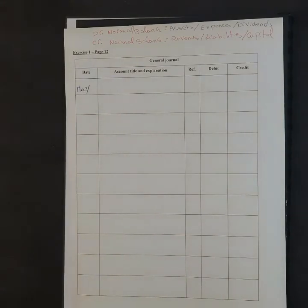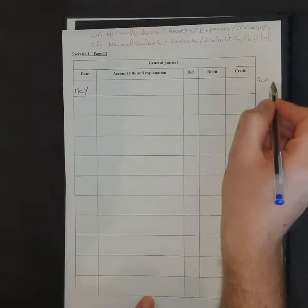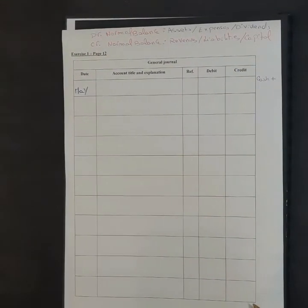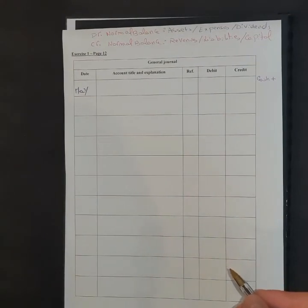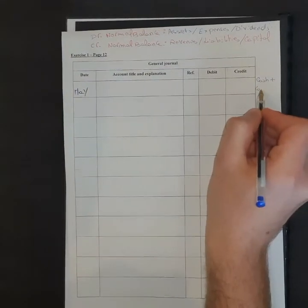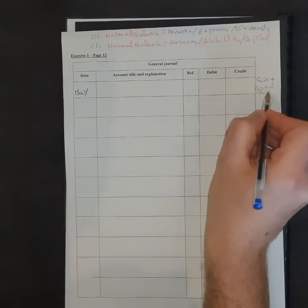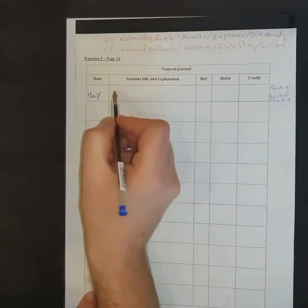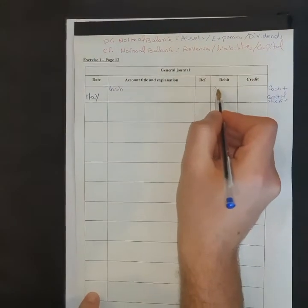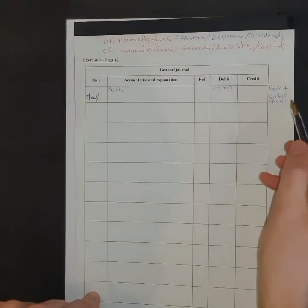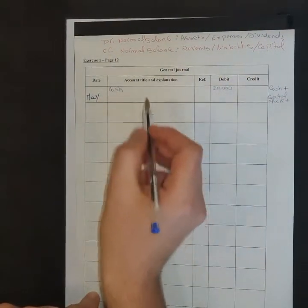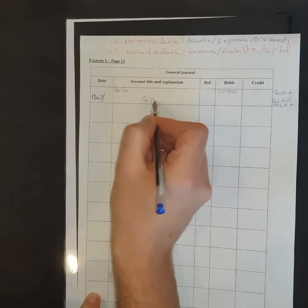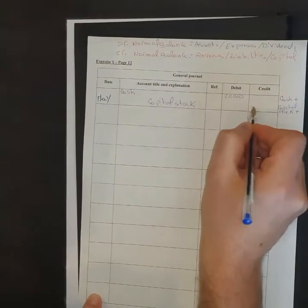Let's start with the first transaction: May 1st — invested $20,000 cash in the business in exchange for common stock. We received $20,000 cash, so the cash account increases, and we issued common stock, so capital stock will increase. Cash has a debit normal balance, so it is recorded in debit for $20,000. Capital stock has a credit normal balance, so it increases in credit for $20,000.